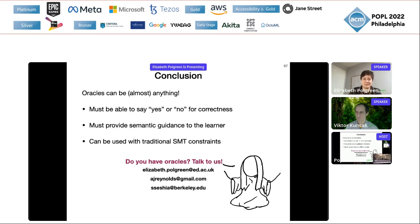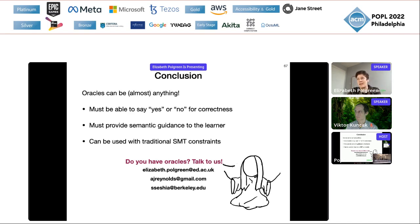Final question: Have you considered applications to decompilation, for example with black boxes and binary blobs — like verifying that a binary blob in the Linux kernel does what it says? Answer: This sounds a little similar to the program lifting work I mentioned at the beginning — synthesizing summaries of black boxes — but maybe not quite the same. We haven't considered it, but I would like to. Email me if you want to talk about it.